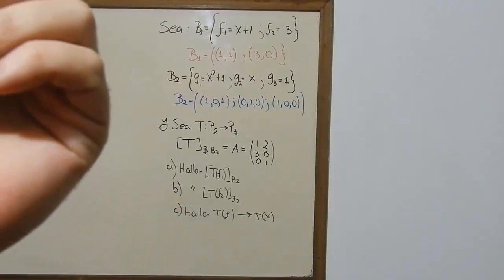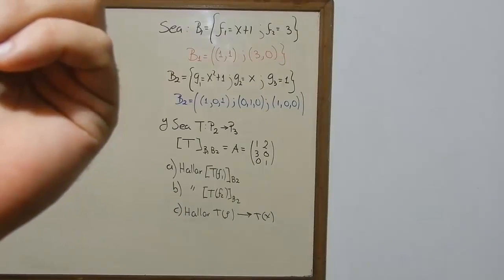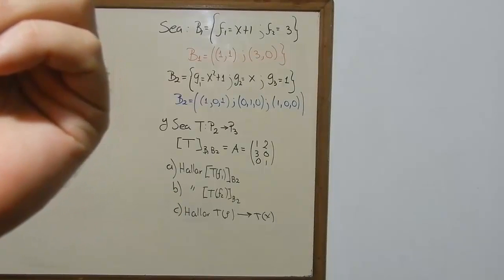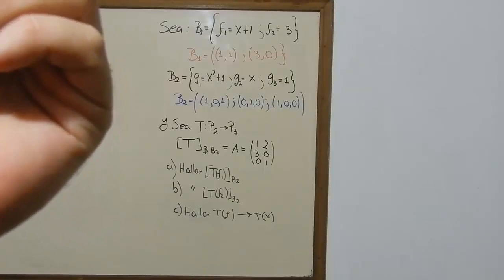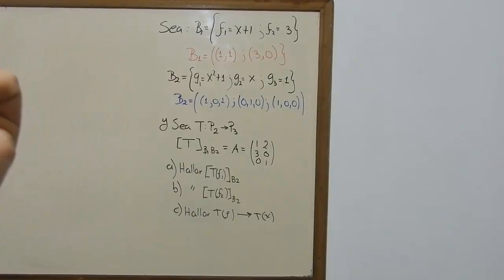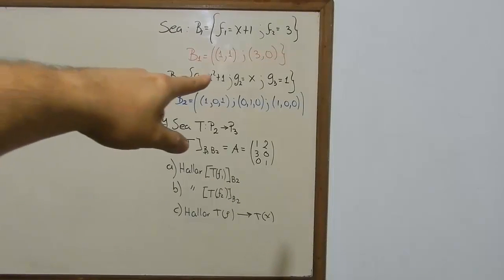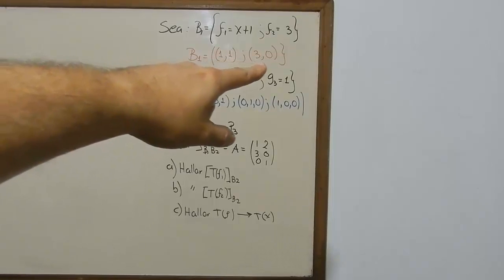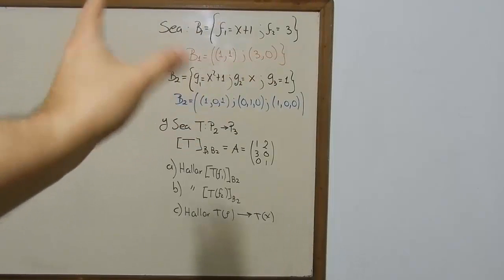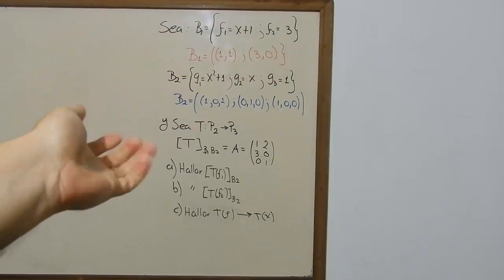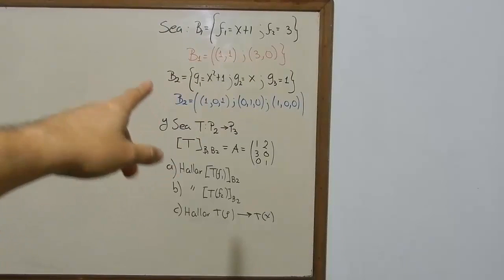First of all, we find Base 1 (B1), which is going to be f1 equals x plus 1 and f2 equals 3, and we already vectorize this the way you see on screen in red.